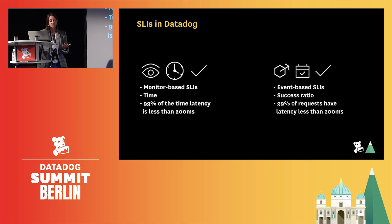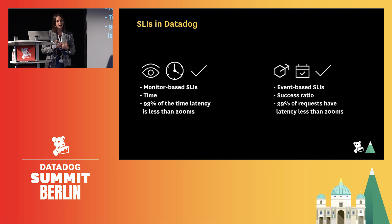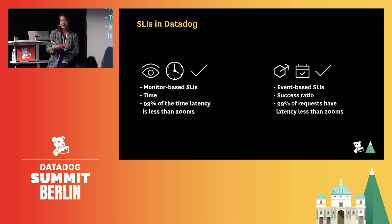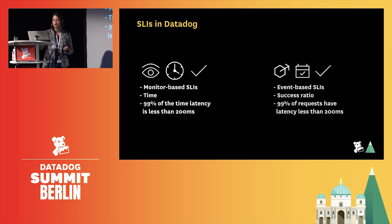So what does that look like in Datadog? To get started, we have different ways to create SLIs. One is a monitor-based SLI, which is time-driven — for example, 99% of the time latency is less than 200 milliseconds. We also have event-based SLIs where you care about the percentage of requests — a success ratio — such as 99% of requests have latency less than 200 milliseconds. These are two different SLIs that Datadog covers.